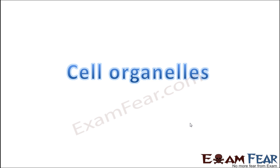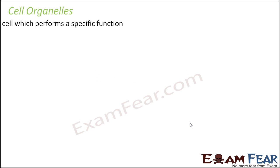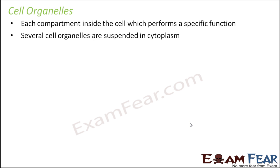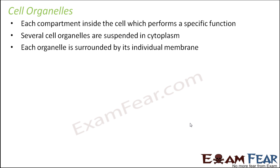That was all about cytoplasm. So far we have discussed the three most important components of the cell: cell wall and cell membrane, nucleus, and cytoplasm. Now we will talk about the different cell organelles embedded in the cytoplasm. A cell organelle is a compartment inside the cell that performs a specific function. Several cell organelles are suspended in the cytoplasm, and each organelle is surrounded by its own individual membrane — this is the speciality of eukaryotic cells.